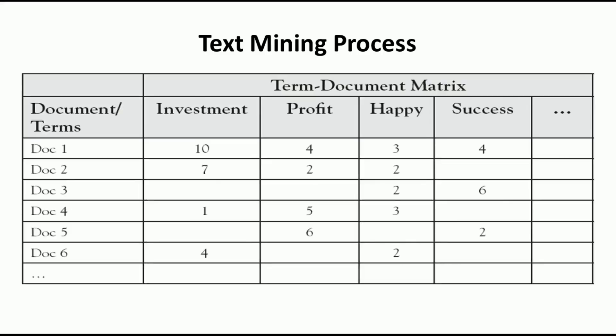In the term document matrix, rows are the documents and columns are the words from those documents. For example, in document one, 'investment' appears 10 times, 'profit' appears four times, 'happy' appears three times, 'success' appears four times, and so on. Some words may not appear in certain documents. We count how many times a particular word appears in a given document and put that value into the matrix. Once this matrix is available, we can apply any data mining techniques because the data is now structured and in numeric format.